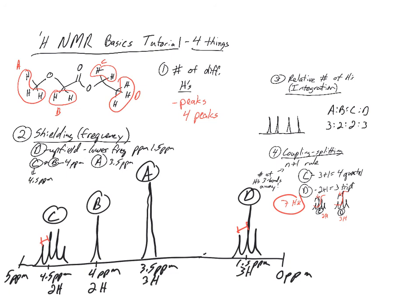To wrap it up: NMR tells us the number of peaks — the number of chemically non-equivalent hydrogens, in this case four. Shielding tells us what kind of atoms are nearby — upfield or downfield; deshielded means near electronegative atoms. Integration tells us the relative number of hydrogens — the area underneath each peak. And finally, coupling tells us who's near each other, three bonds away — the n plus one rule gives us quartets and triplets. Then we can tell who's coupled to each other by the coupling constant.